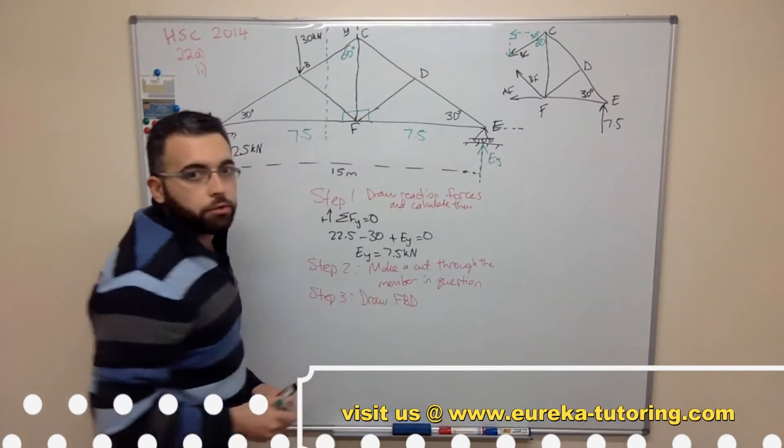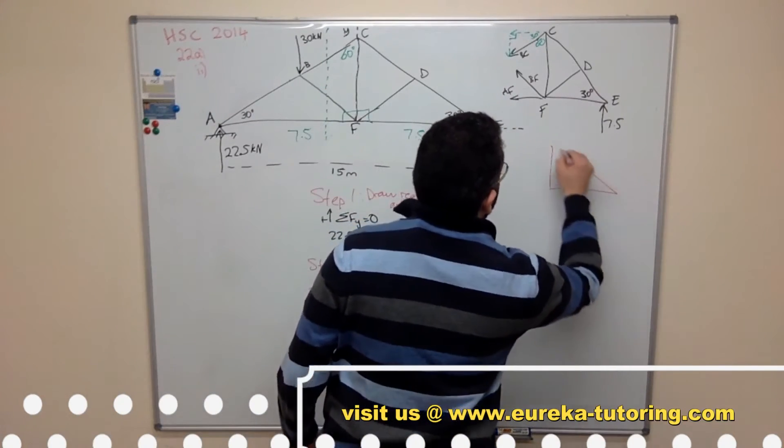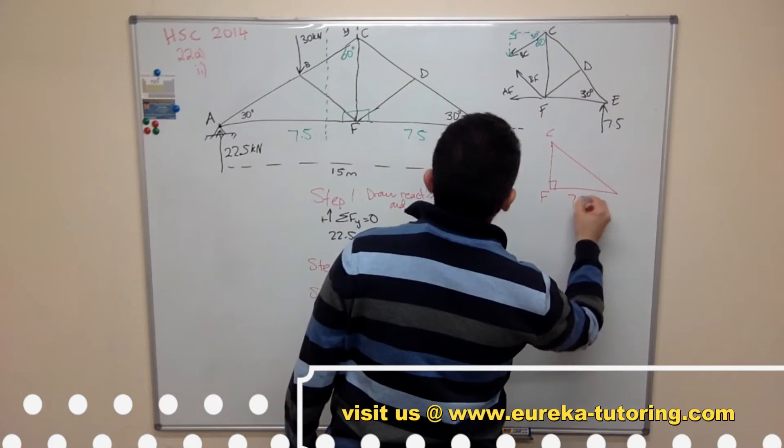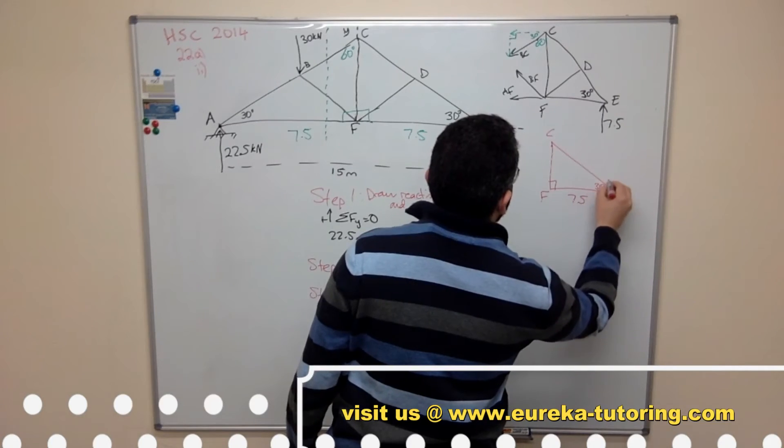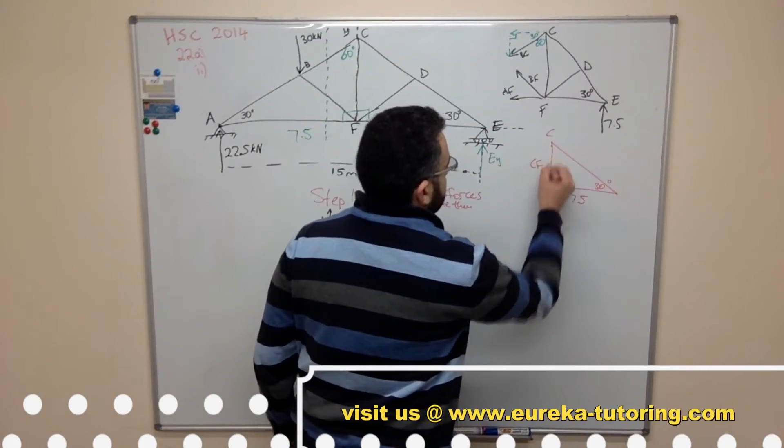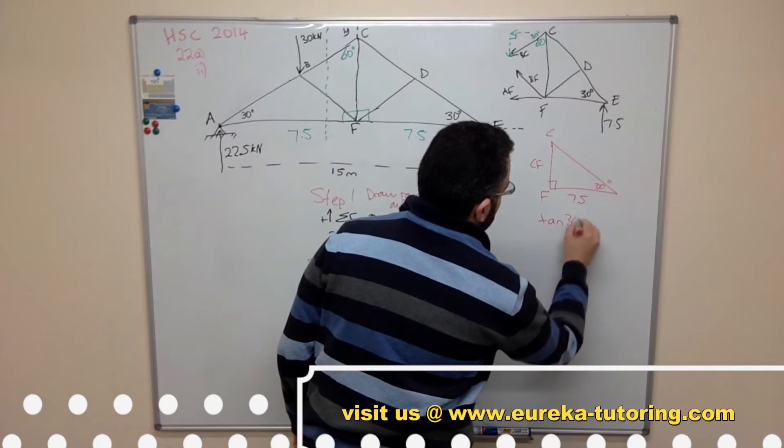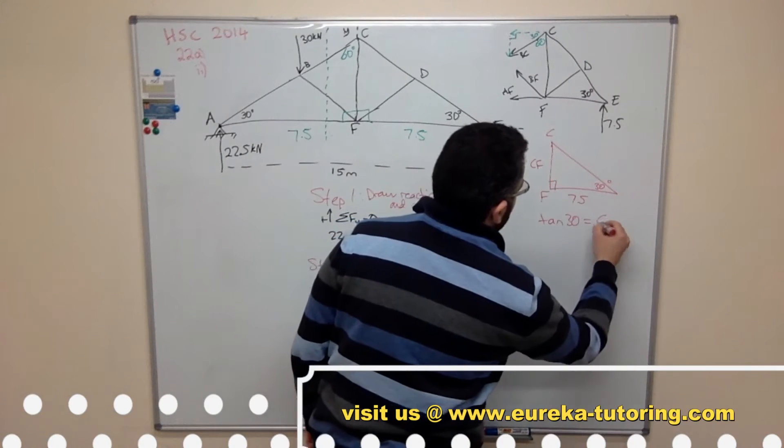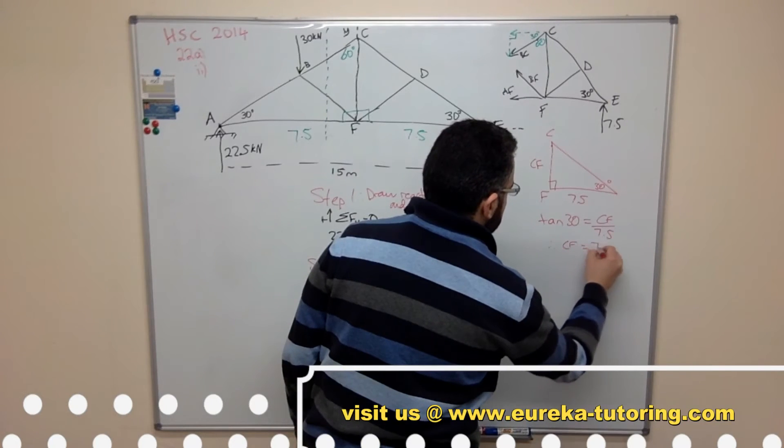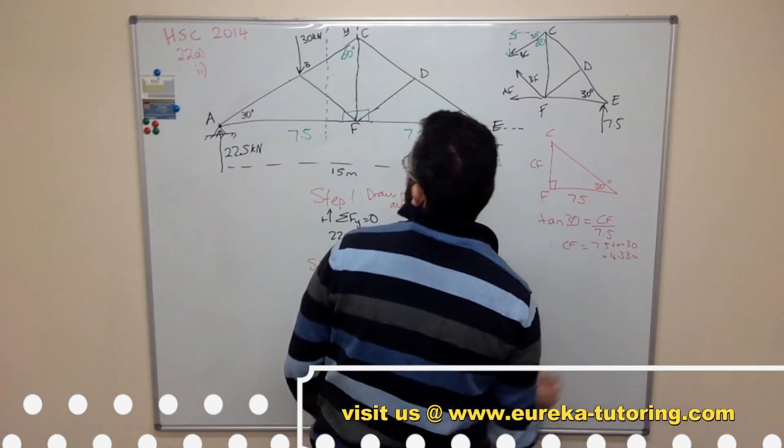And we can use our trig ratios. So we pretty much have this triangle here. So this is CF. This is 7.5, this is 7.5, this is 30 degrees. So this is what I want. So I will call it CF. Opposite on adjacent is tan. So tan 30 equals opposite, which is CF. So CF equals 7.5 tan 30, which equals 4.33 meters.